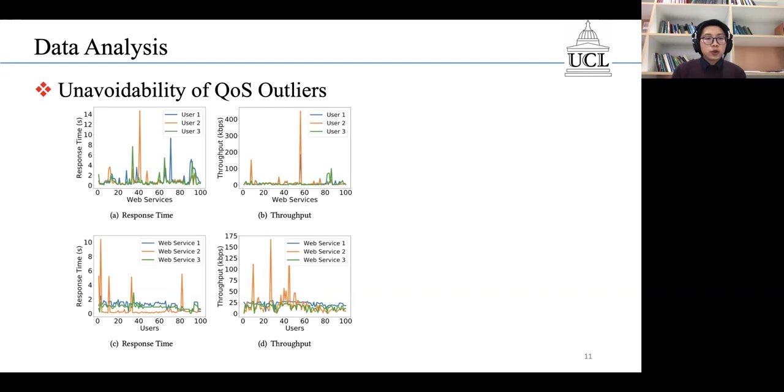These abnormal values should be treated as outliers. Without taking them into consideration, the model may not achieve satisfactory performance.